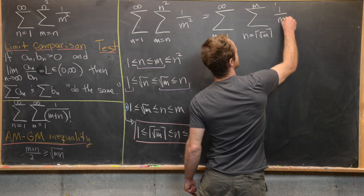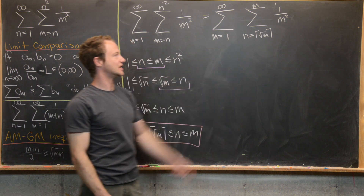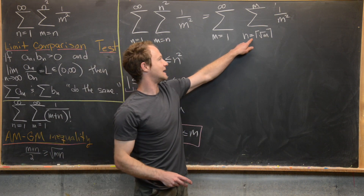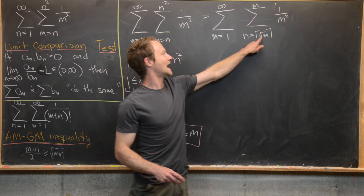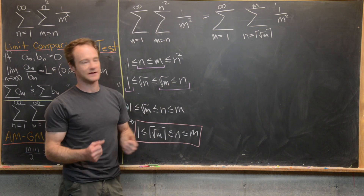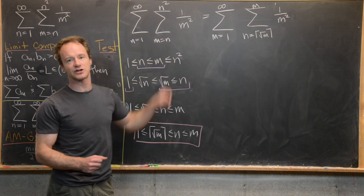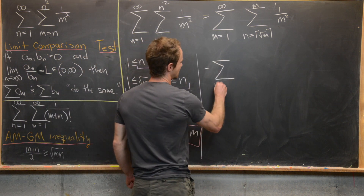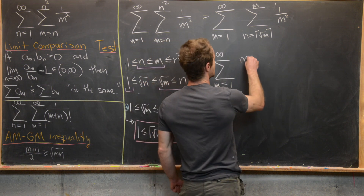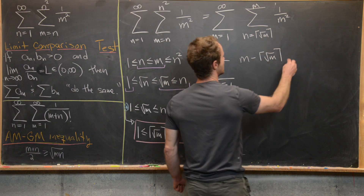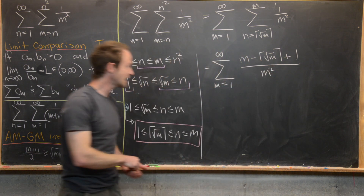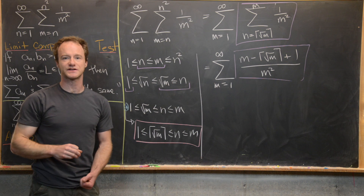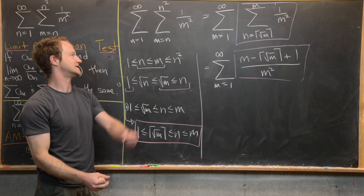Now with respect to the inner summation, one over m squared is a constant. So what we're doing is adding up one over m squared a bunch of times — specifically, m minus the ceiling of the square root of m plus one times. That is, the ending term minus the starting term, plus one. So here we have the sum m equals one to infinity of m minus the ceiling of the square root of m plus one, all over m squared. That inner sum collapsed to this term because it was just a sum of constants that depended on the outer summation.